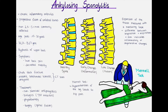Ankylosing spondylitis is a type of chronic inflammatory arthritis that primarily affects the axial skeleton, including the vertebral column, sacroiliac joints and the hip joints. The hallmark of ankylosing spondylitis is the progressive fusion of the vertebral bones, leading to an increased risk of spinal deformities and decreased mobility.